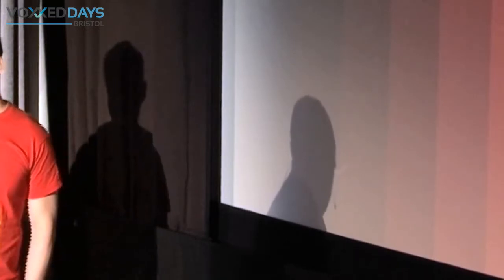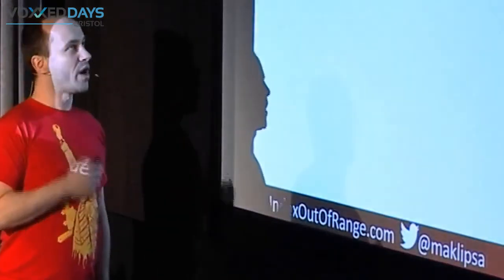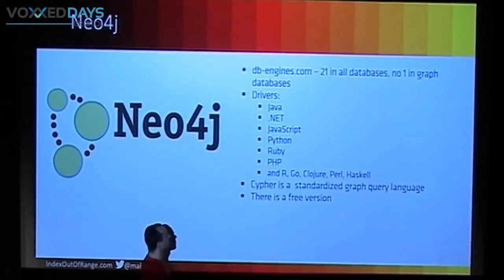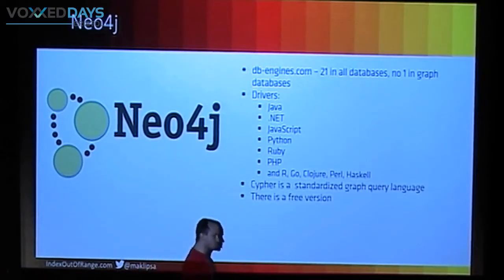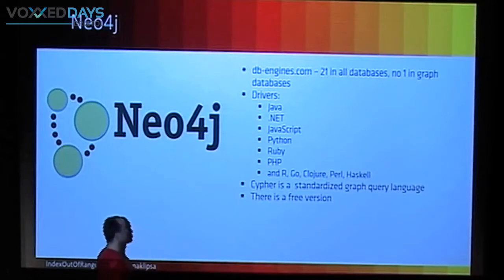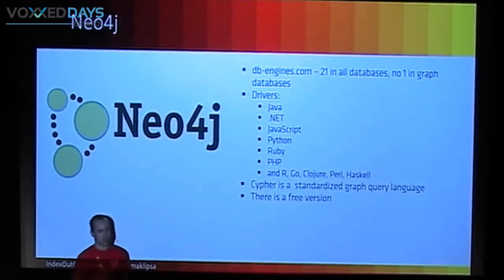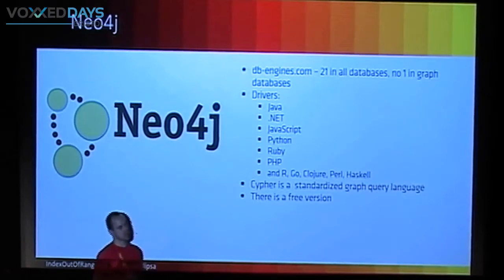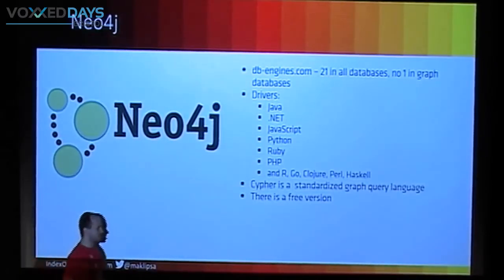Neo4j — why Neo4j? Because on DB Engines, Neo4j is the most popular graph database, fluctuating between 20th and 21st most popular database overall. It has drivers for almost any language. Cypher — they created something called OpenCypher, which is a standardized query language for graph queries. There is a free version and a paid version; the paid version has support for online backups and so on.